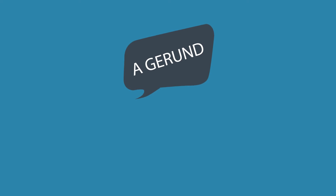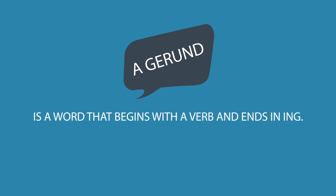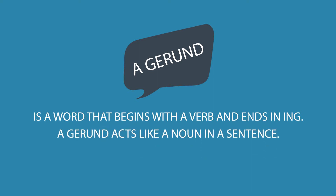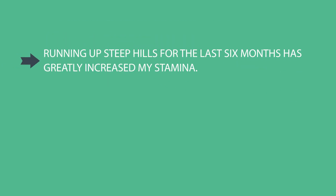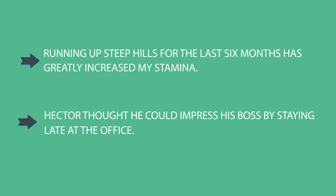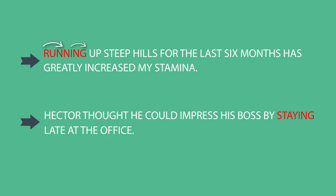Like a present participle, a gerund is a word that begins with a verb and ends in -ing. Unlike a participle, though, a gerund acts like a noun — that is, it names a person, place, or thing in a sentence. Running up steep hills for the last six months has greatly increased my stamina. Hector thought he could impress his boss by staying late at the office. Running is a gerund: it is composed of the verb run, ends in -ing, and is used as a noun. Staying is another gerund: it is composed of the verb stay, ends in -ing, and is used as a noun in the sentence.